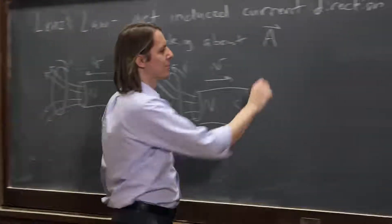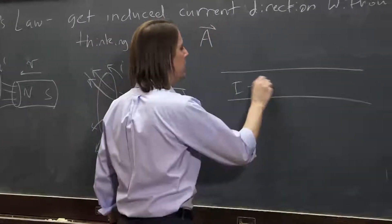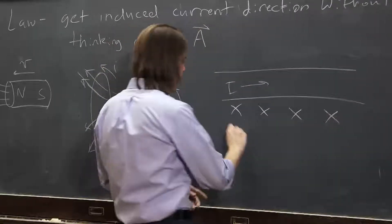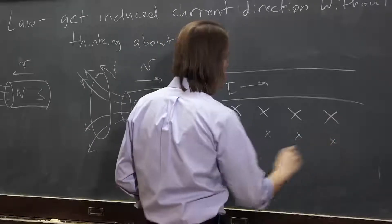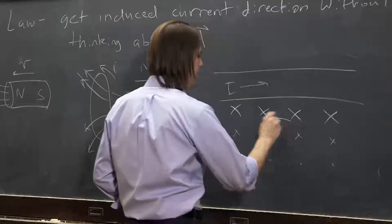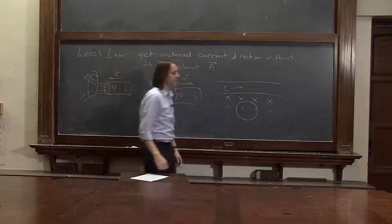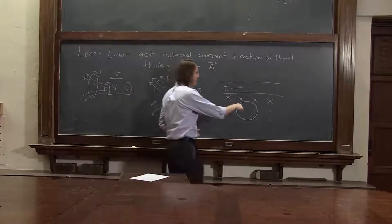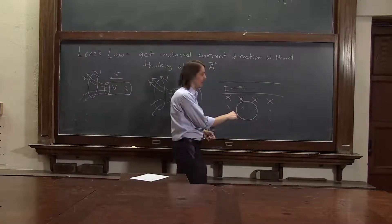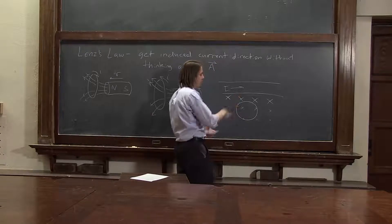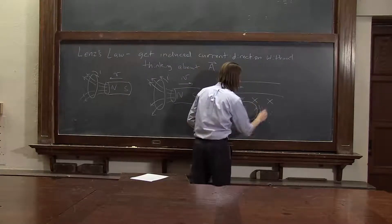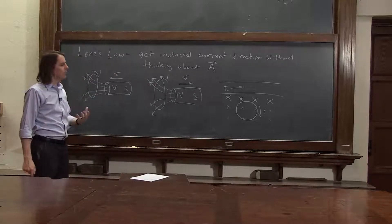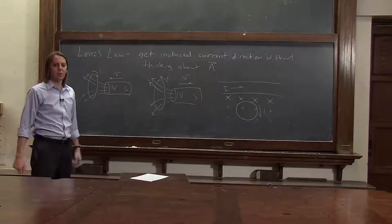We can go back to this problem. We had a big wire like this, current going like that, with a strong B field going into the board there, and then it gets weaker. Say we have a loop that we just drop and it falls due to gravity — which way is the current going to go? The B field is going in and it's getting smaller, so you want to oppose the change. You want to make it get bigger, so you make a B field in the same direction. Lenz's law will get it for you quickly. All you've got to remember is that it forms a magnetic field that always opposes the change in the one that induced it.